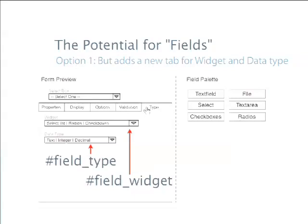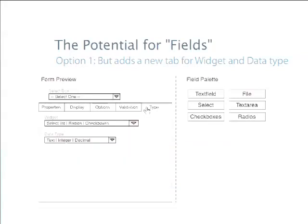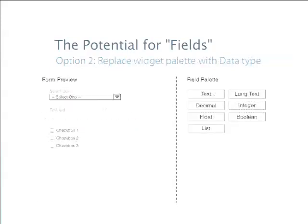I thought it made total sense: if I want a text field, I drag in a text field and set the data type on it. However, after having a lot of conversations about this, there was a suggestion to not put the widgets over here — this is essentially a list of widgets, then you set the data type inside. That's backwards from the way CCK or field module works right now. What would it look like if you put the data type in the palette instead and dragged in text, integer, or float? And it sounds like a terrible idea. If you have text field, file, select, textarea, checkboxes, radios in option one, in option two you'd have text, long text, decimal, integer, float, boolean, list. It's a bit puzzling what would happen as you pull those things in.